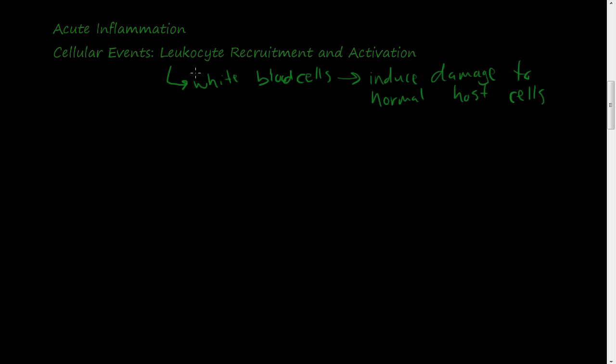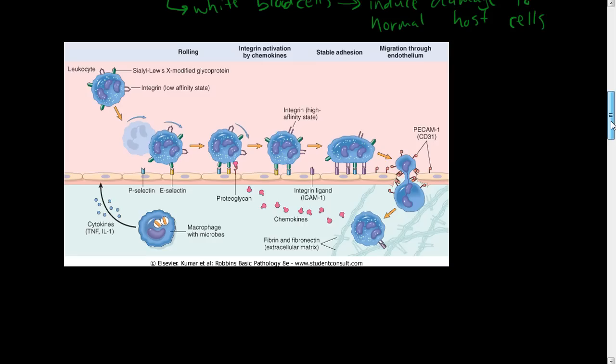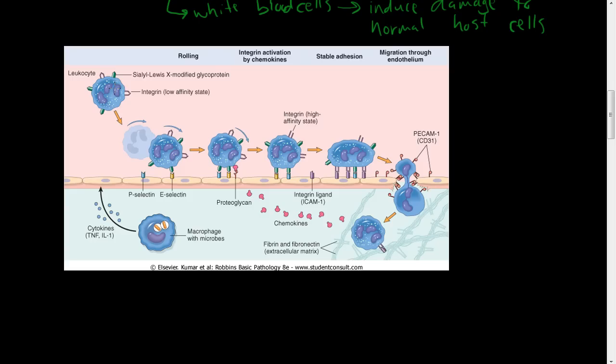This picture explains in great detail the recruitment of leukocytes. We have a leukocyte traveling in the bloodstream — a white blood cell. As we talked about in the previous video, vascular permeability and vasodilation increase the viscosity of the blood so that white blood cells actually slow down. White blood cells are a lot larger than red blood cells, so they're pushed naturally toward the wall of the vessel.